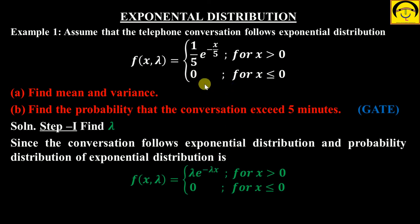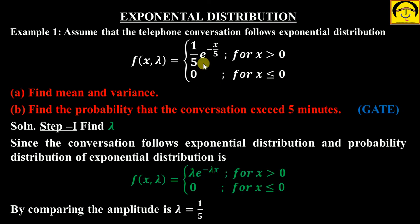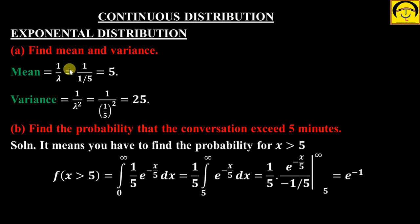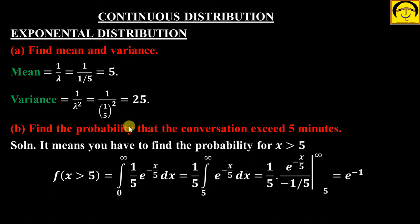General PDF of exponential distribution se compare karo: λ · e^(−λx). Given PDF: (1/5) · e^(−x/5). So comparing, lambda is nothing but 1/5. Lambda nikal gaya. What is mean? Mean is 1/λ, so 1/(1/5) = 5. Variance ke liye 1/λ², so it becomes 25.